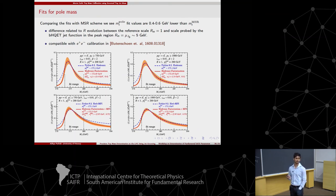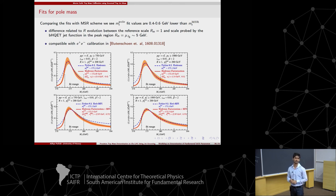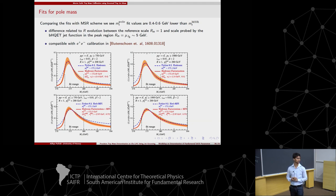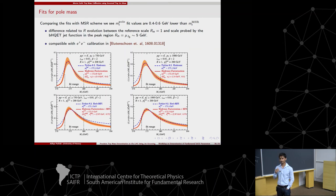Question: Is the PP calibration compatible with the e+e- top quark mass calibration — do the numbers match? Answer: Yes, the MSR mass at R=1 matches between PP and e+e-, and the 0.5 GeV difference when fitting pole mass is also observed in the e+e- case. The uncertainties on the PP number are preliminary — roughly 0.5 to 1 GeV — but this was a proof-of-principle study and more careful work is needed.